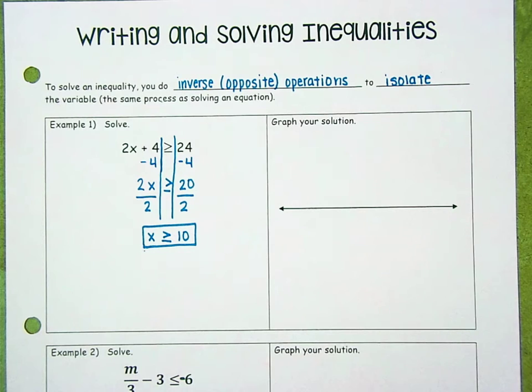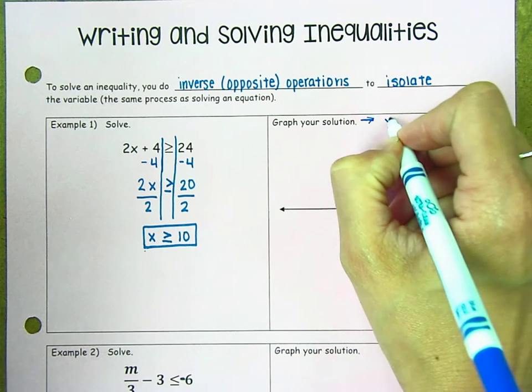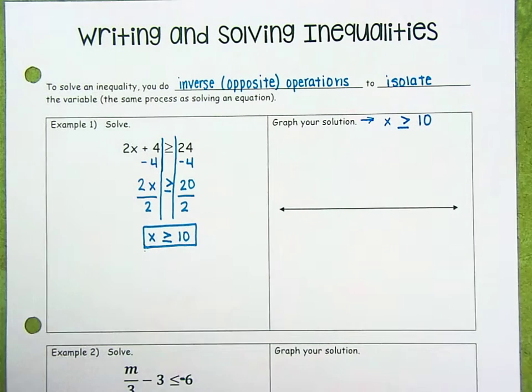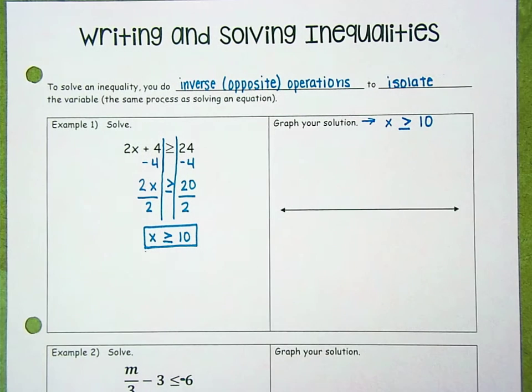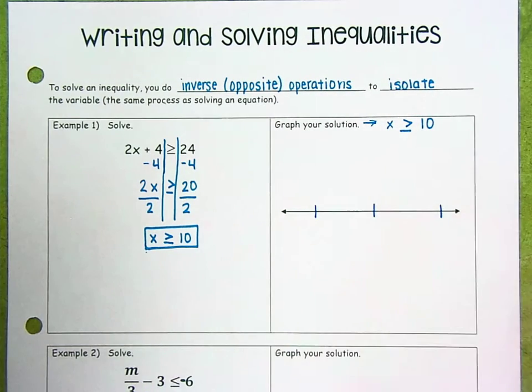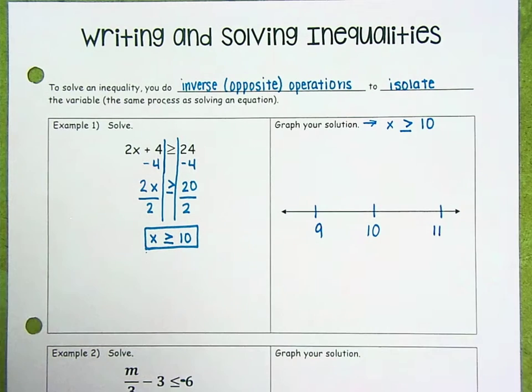Now we want to move on to graphing our solution. So the solution really is after we've isolated the variable. So in this case, our solution is x is greater than or equal to 10. So these are all of the possible solutions that we have for this inequality. I'm going to draw three values on my number line. I'm going to put 10 right in the middle and we'll put 9 and 11 on either side.